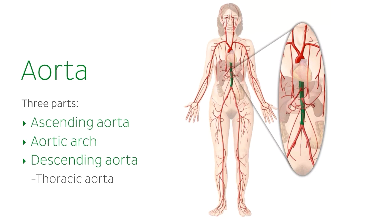The thoracic aorta is located within the thoracic cavity, and an abdominal part called the abdominal aorta is located within the abdominal cavity. The thoracic aorta runs posterior to the heart and is not entirely visible in this image.